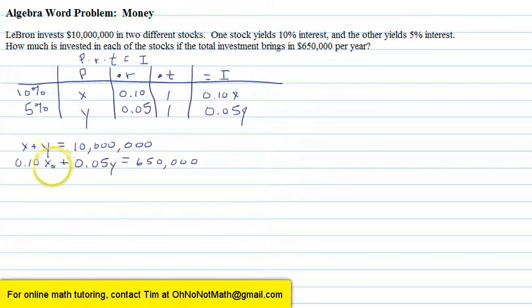So now I have two equations and two unknowns. I have a system of equations. There are a number of ways that we could solve the system. Typically, the methods of addition or substitution are used. In this particular problem, I'm going to use the method of addition.